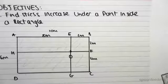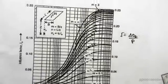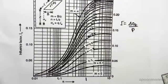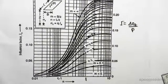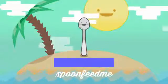Just like before, we're going to use an influence graph. This one is a bit different, but you can see that we have values of m and n.